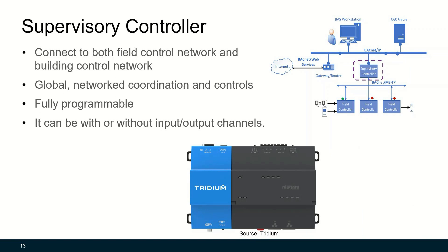The supervisory controller connects both the field control network and building control network. It provides global network coordination and control, and is fully programmable. It can be with or without input or output channels. Data typically comes from the field controllers, passes through the supervisory controller, and is then sent to the workstation or BAS server. Field controllers typically don't communicate peer-to-peer; rather, they communicate through the supervisory controller.